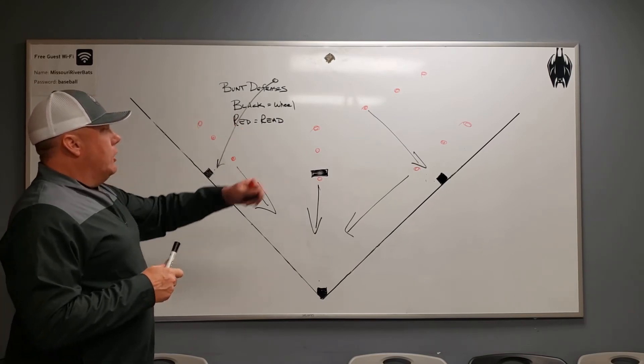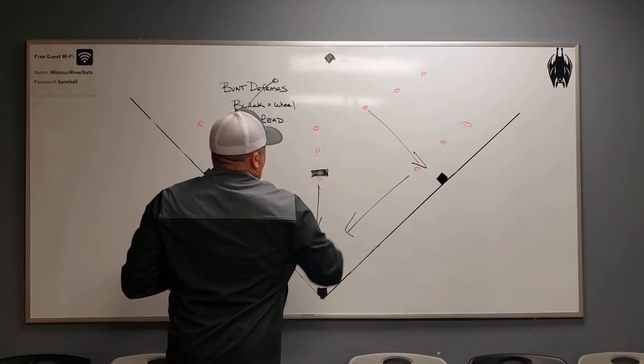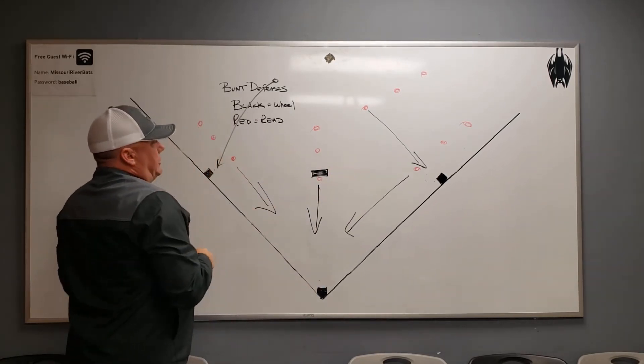You just call black. Everybody knows, hey, get over there. This second baseman, if you feel like they're going to bunt, they should start to move over a little bit. And then just crash and get that out.